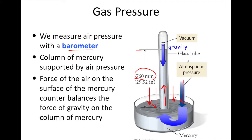As atmospheric pressure increases, the column of mercury will rise. If atmospheric pressure decreases, the column of mercury will go down. So a barometer gives us a measure of external or atmospheric pressure.